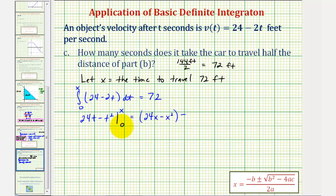So this would give us 24x - x² minus, notice when t is 0, these are both 0, so we just have minus 0, and this must equal 72.